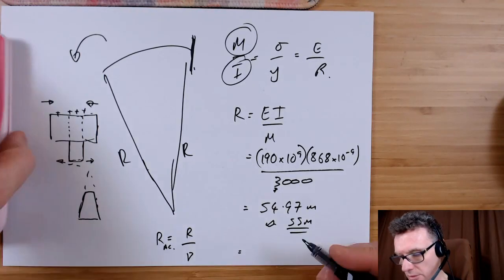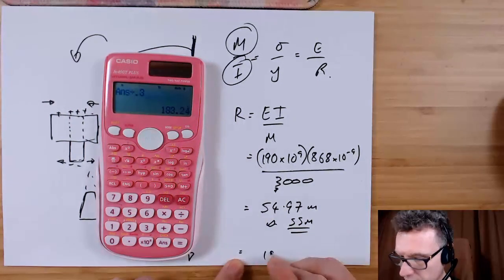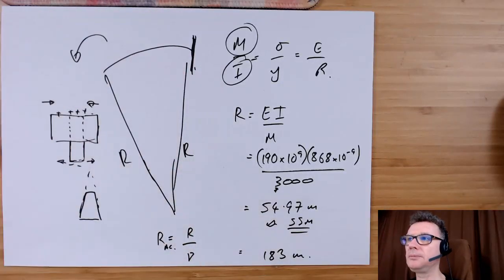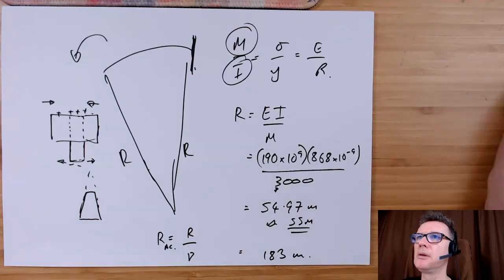So divide by 0.3, so that's going to be 183 meters. Okay, that's 3.1 done.